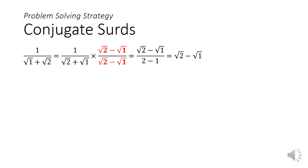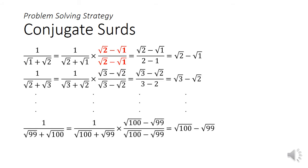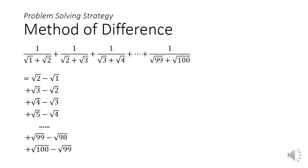The trick to this problem is to first rationalize the denominators for these surds by multiplying both the numerator and the denominator with the conjugate surd. You will start seeing a pattern as you simplify these surds. When you lay out all the terms in two columns, what you will notice is that most of these terms will cancel out. Only root of 100 and root of 1 is left over, and these can be evaluated to give you 9.